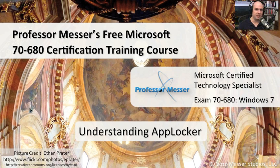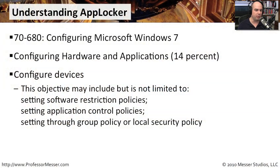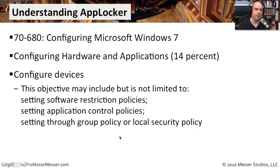Welcome to this module of Professor Messer's free Microsoft 7680 certification training course. This module is on Understanding AppLocker. I'm James Messer. In this module, we're going to go through the requirements from our Microsoft Certification 7680 exam, where we need to set software restriction policies, set application control policies, and set through group policy or the local security policy. We're going to focus our efforts in this video on AppLocker. If you haven't seen the previous video on software restriction policies, you might also want to look at that one, as a lot of the concepts are very similar between those two topics.